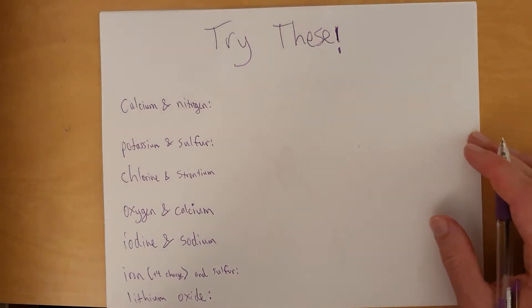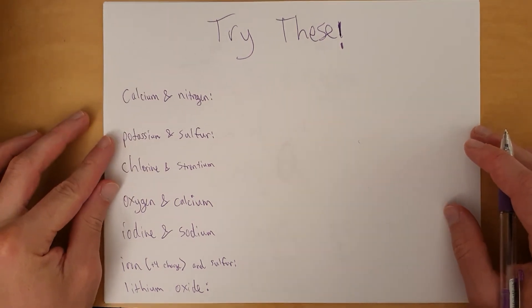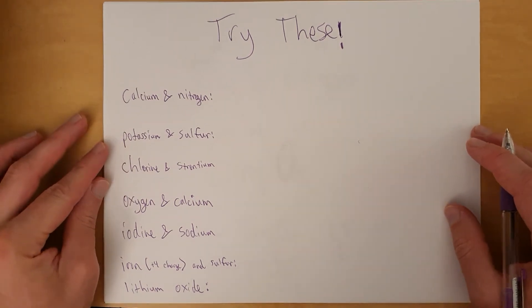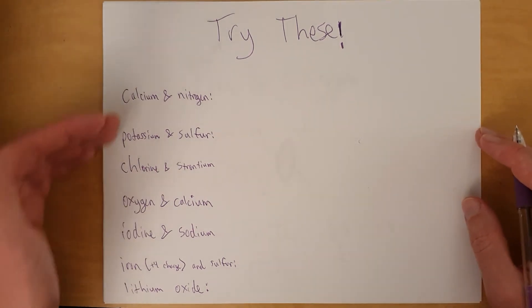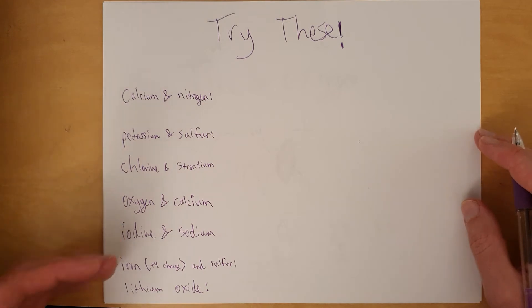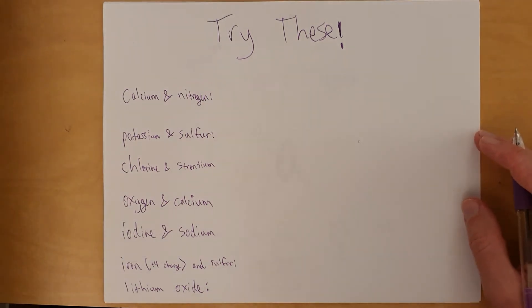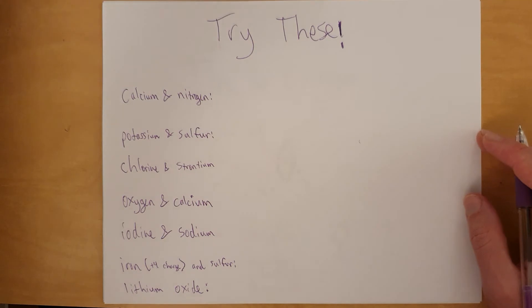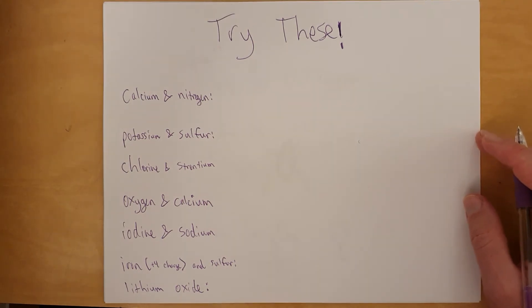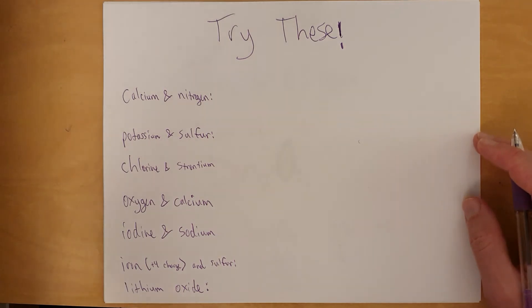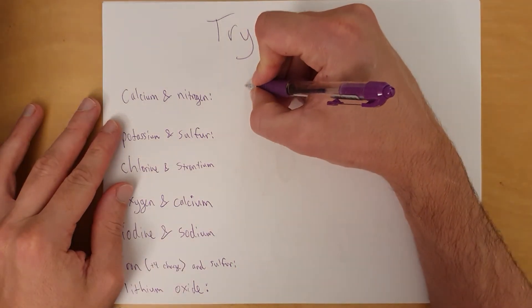You should be able to predict what formulas each of these represents. Give it a shot, pause the video, and then you can resume and I will show you how to get these. All right, let's just go through each of these really quickly. What would it be? Calcium and nitrogen.